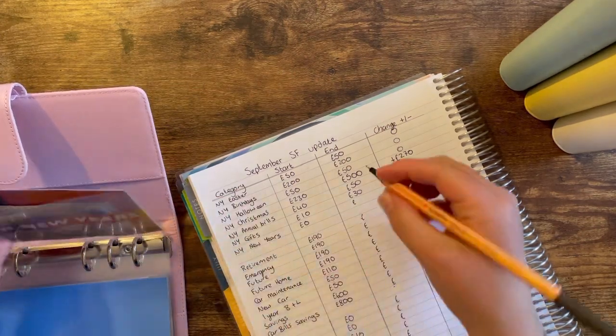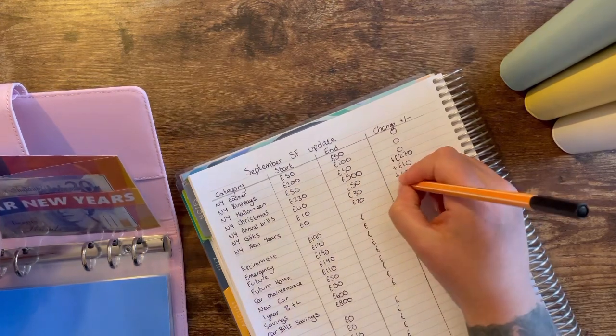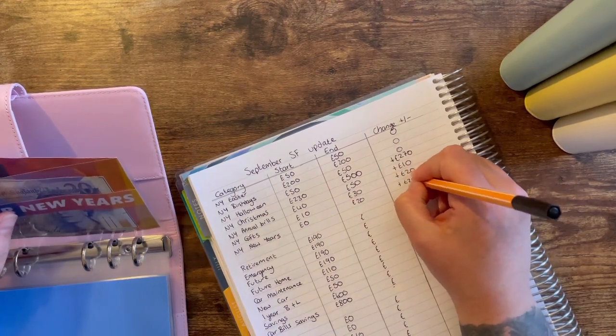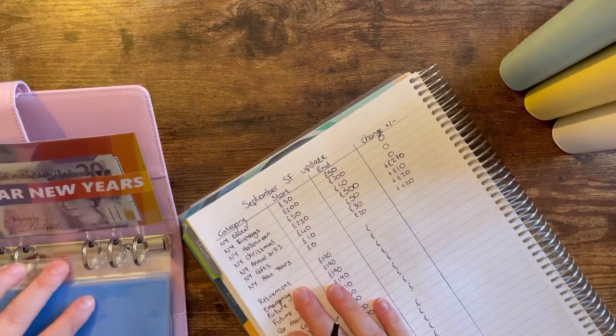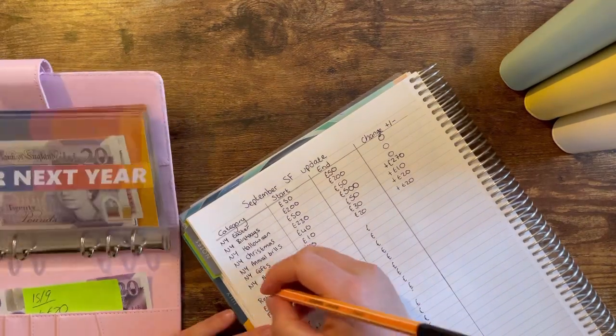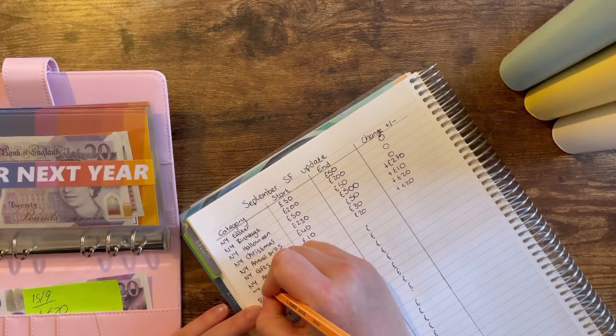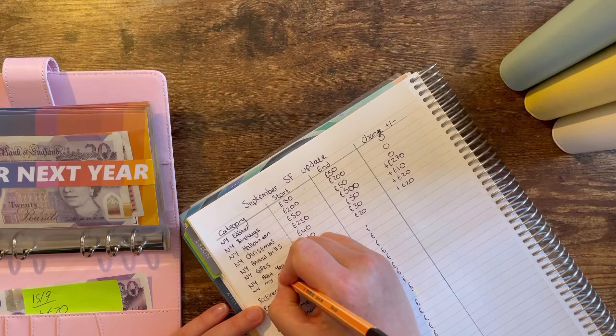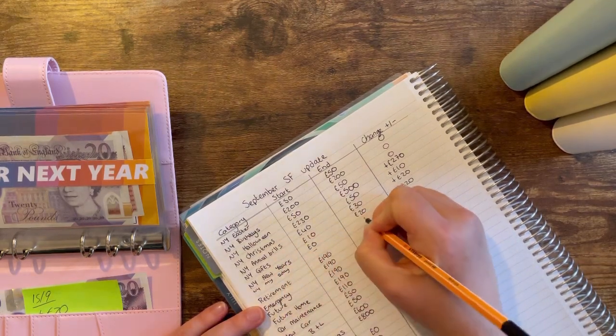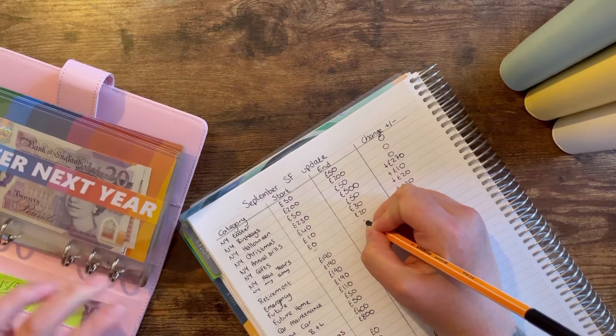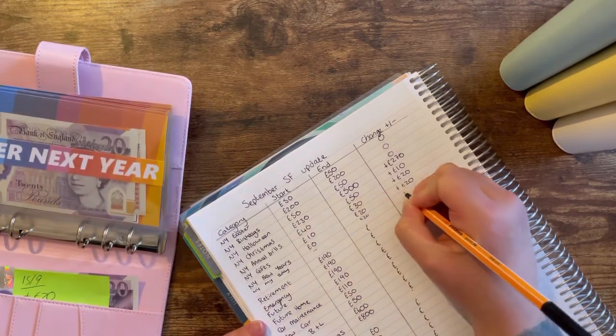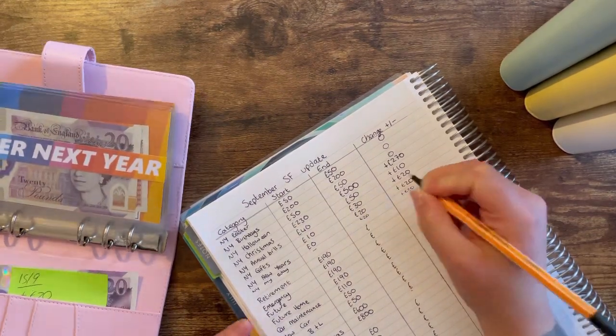Next year New Year's I added the 20, so it's plus 20. And then I'm just gonna add next year my birthday. My birthday had nothing in it to start with and there's now 20, so that's a positive change of 20.